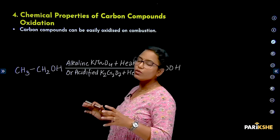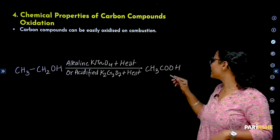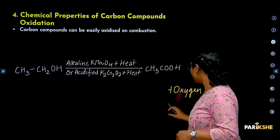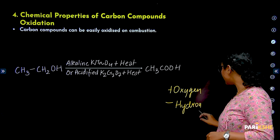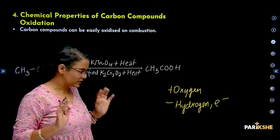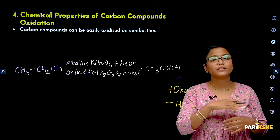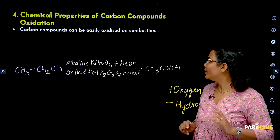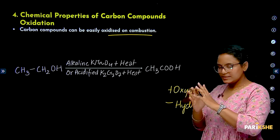Next is oxidation. Combustion is also a form of oxidation. Oxidation is the process of adding oxygen, or the process of removal of hydrogen or electrons from a substance. Combustion is uncontrolled oxidation, but controlled oxidation can also be carried out — carbon compounds can be easily oxidized.